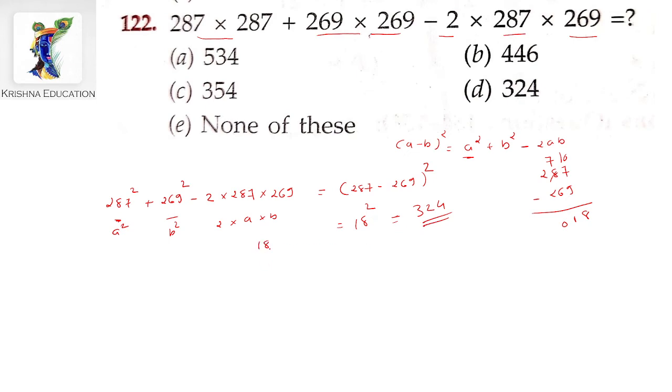18 squared: multiplying 18 by 18. We calculate step by step: 8 times 8 gives 64, carry 6. Then 16 plus 6 equals 22. Carrying through, we get 324.